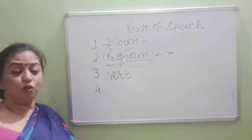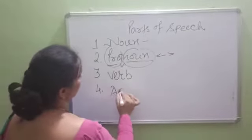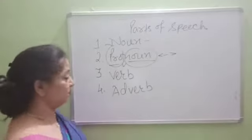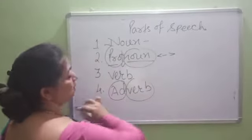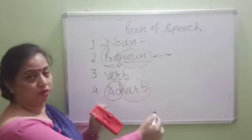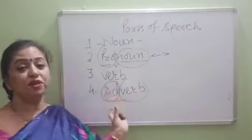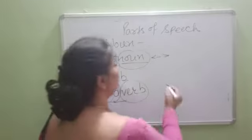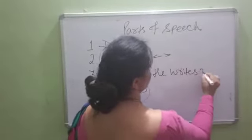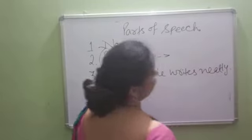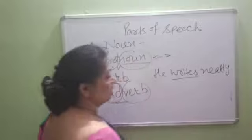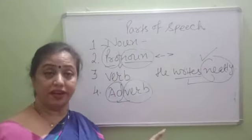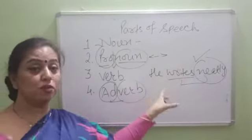Coming to the next one — the fourth part of speech is adverb. In the word itself the meaning is there. Adverb means 'add' plus 'verb' — it is the word which adds to the meaning of a verb, which qualifies the verb. For example, 'He writes neatly.' Here 'writes' is the verb, and 'neatly' tells how he writes. It is adding to the meaning of the verb. That is adverb.